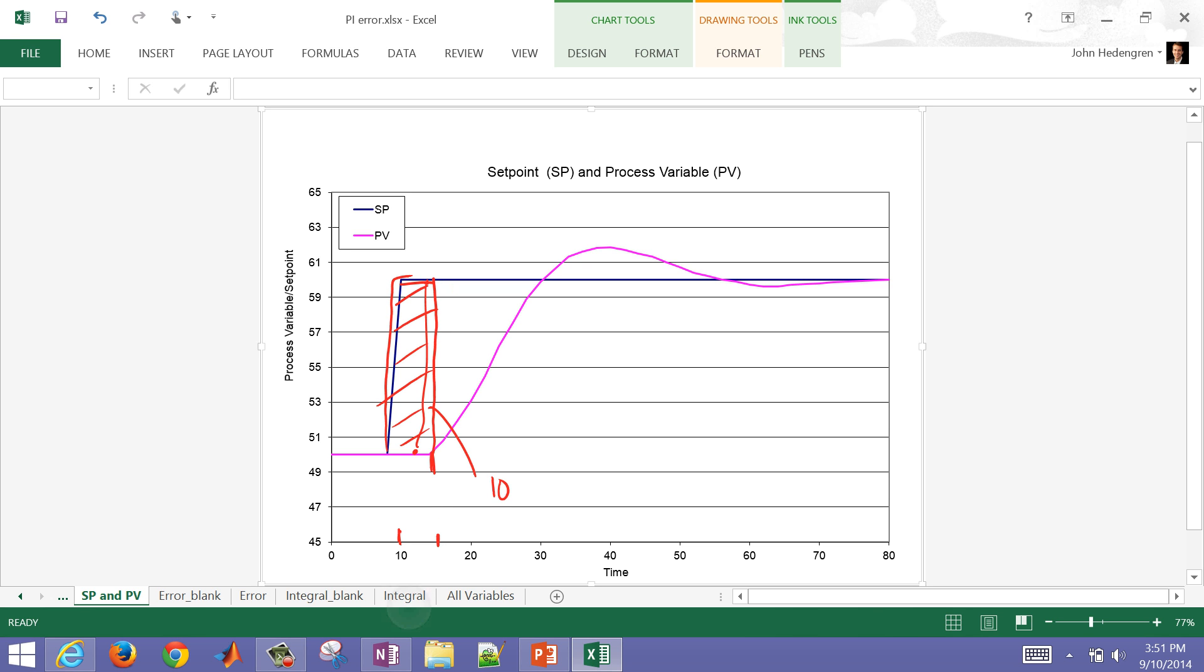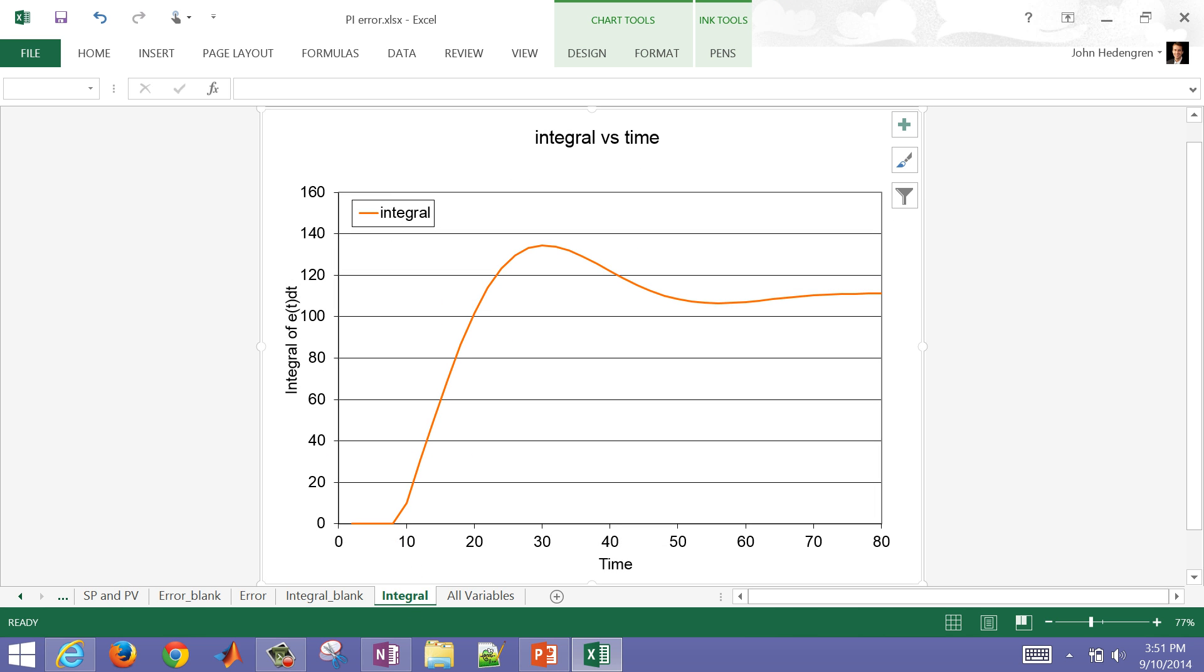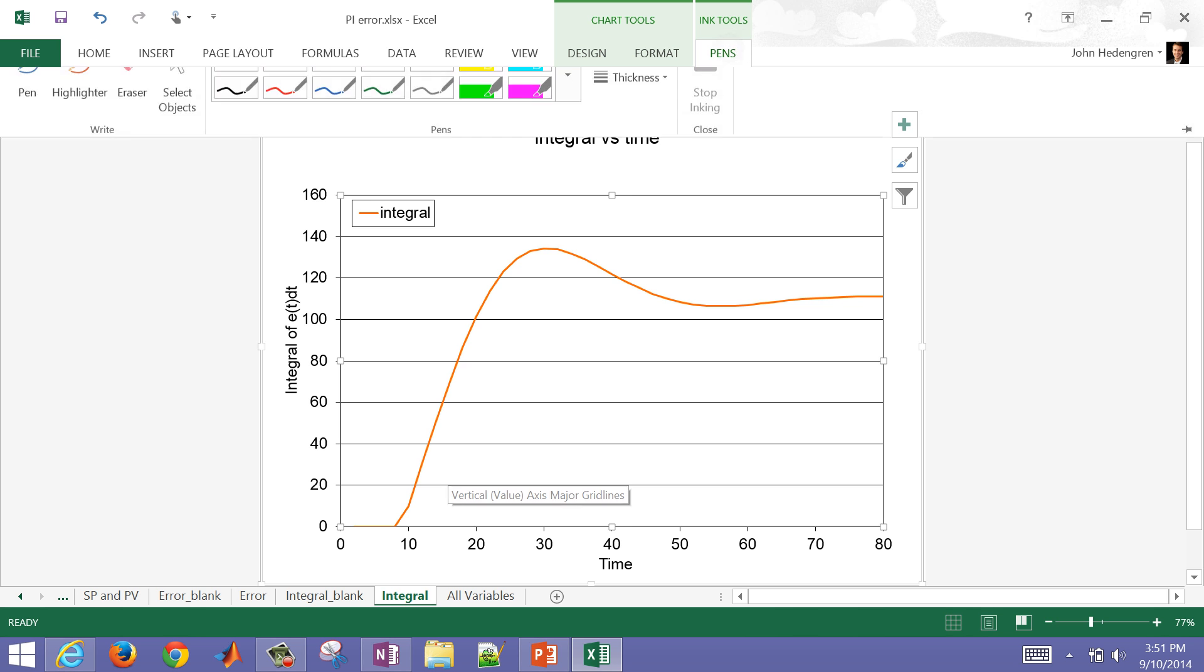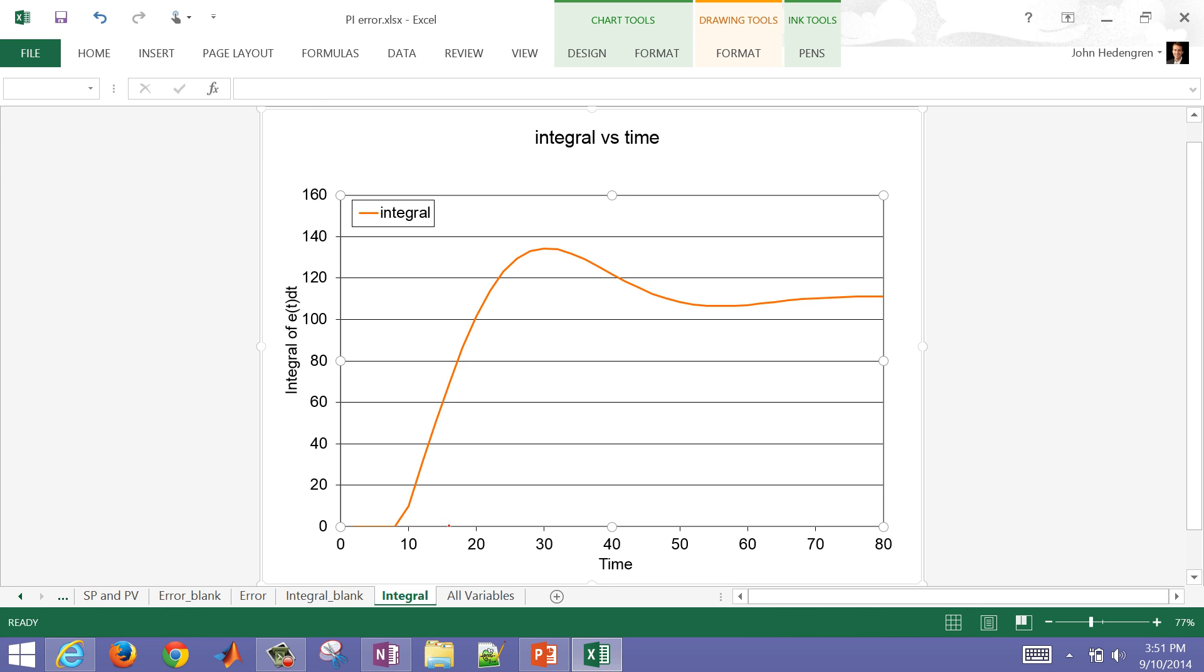On the integral plot here, at 15, at a value of 15, I'm going to have a value of 50 on the integral. And then it just goes up from there. Here I had a constant slope, and then here the slope is going to start decreasing. This point on the integral is where the error is actually going to become negative, and it's going to start integrating, and the integral is going to decrease.